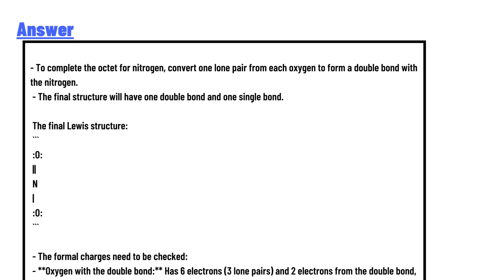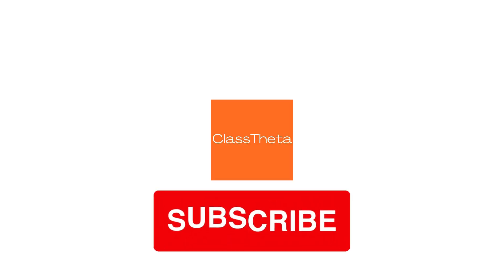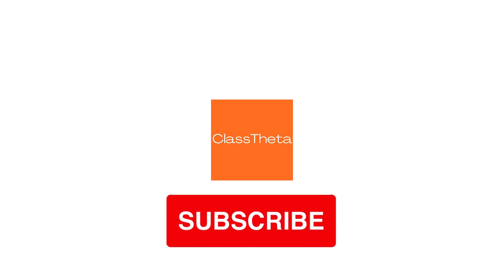This is the Lewis structure of the nitrite ion. Ensure that all formal charges are correctly assigned to match the total charge of -1. This is the correct answer to the question.